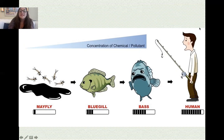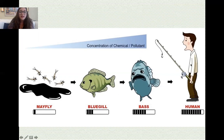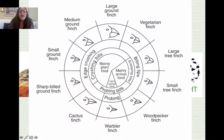Remember, this isn't just a higher concentration in humans — it's a higher concentration in all higher-level consumers. Even a bass has higher concentration than a bluegill, and a bluegill has higher concentration than a mayfly. It gets higher as it goes up: biomagnification.